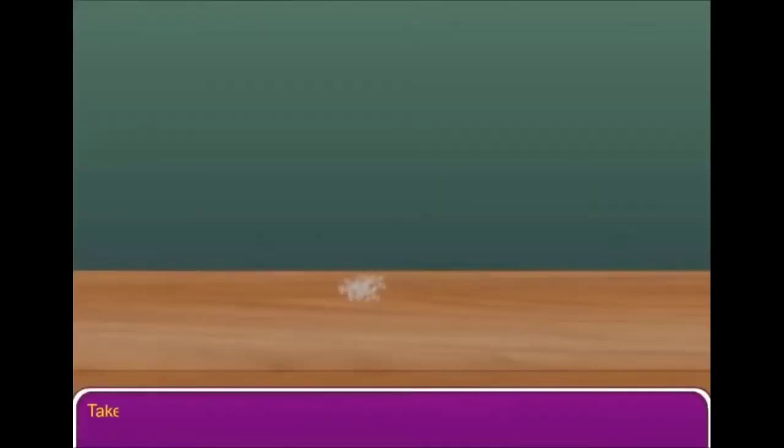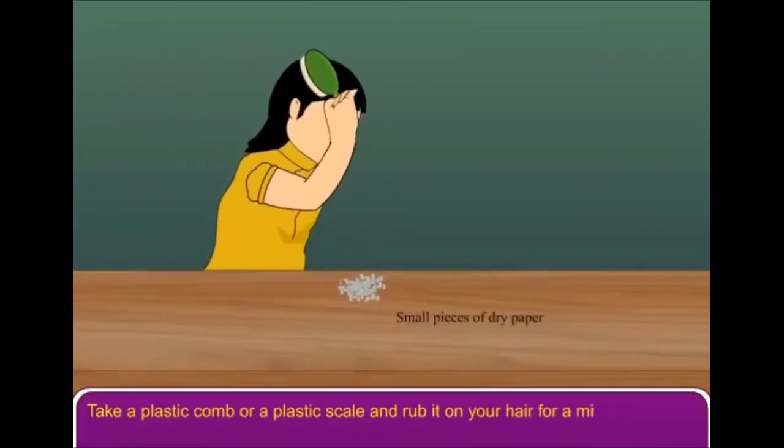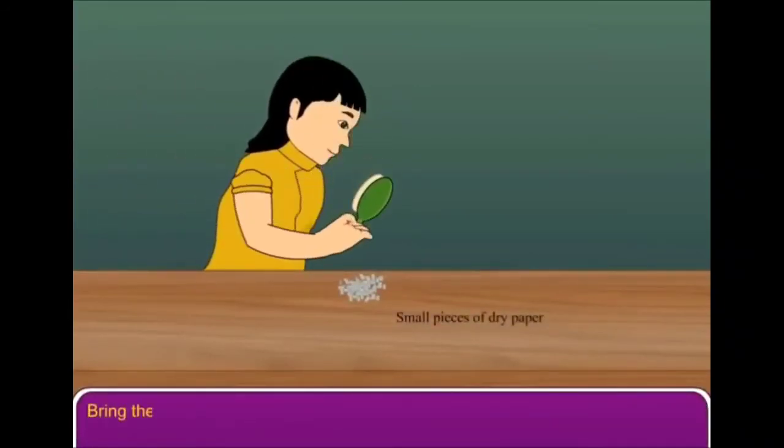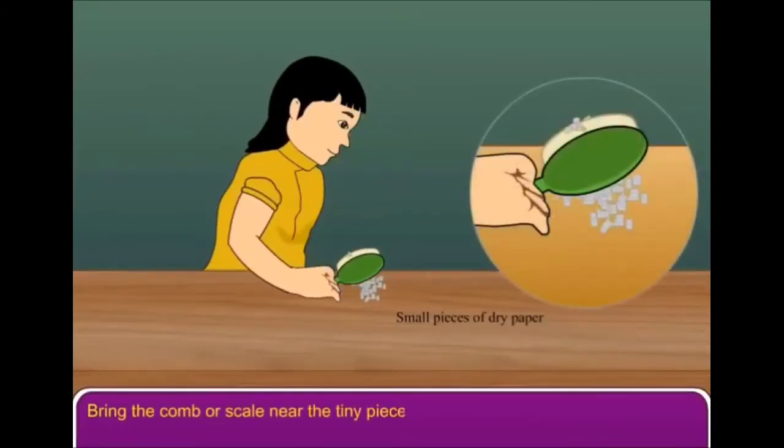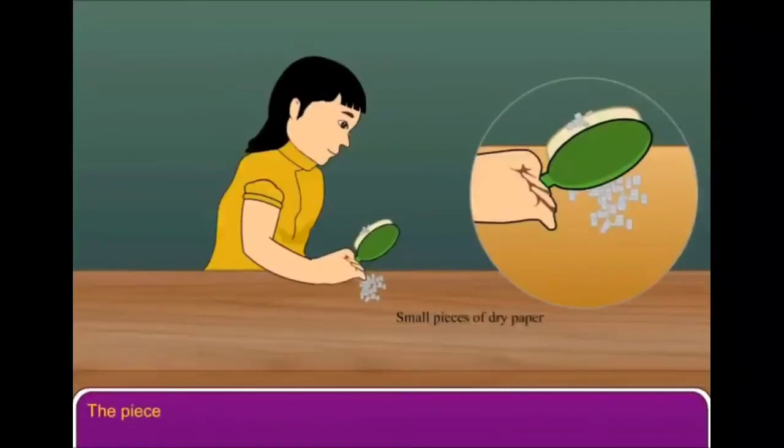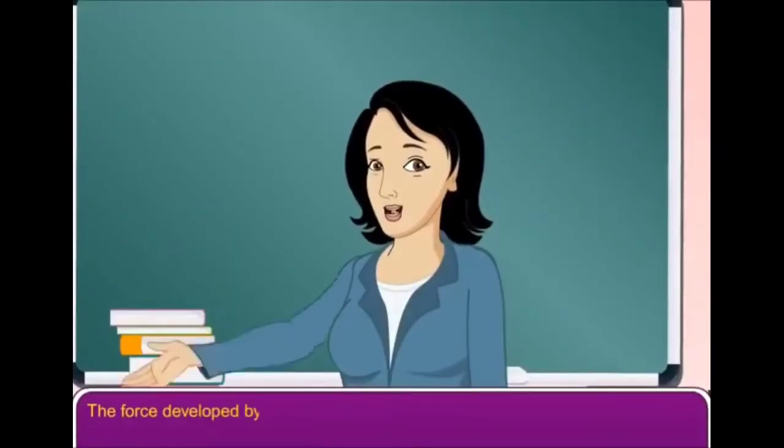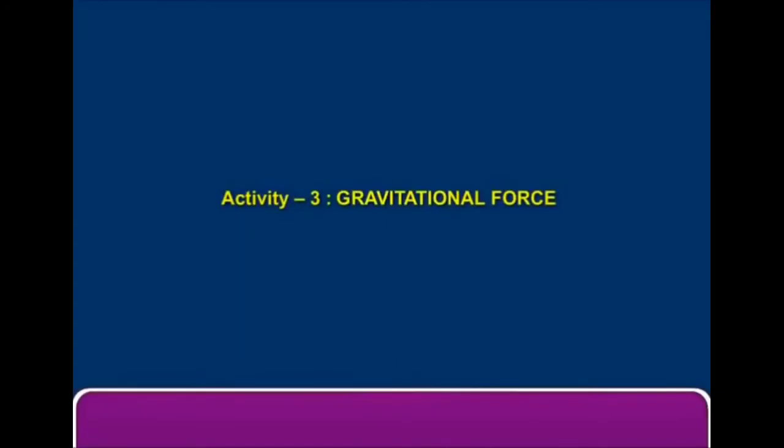Activity 2: Take a plastic comb or a plastic scale and rub it on your hair for a minute. Bring the comb or scale near the tiny pieces of paper. What do you observe? The pieces of paper are attracted towards the comb or the scale. The force developed by rubbing the comb or scale is called electrostatic force.